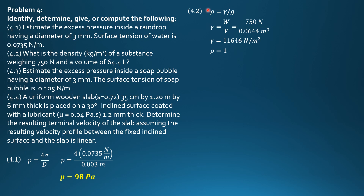Substituting, density is 11,646 N divided by 9.81, where G is 9.81. So, density is 1187 kg per cubic meter. Alternatively, you may solve for the specific gravity first, then multiply by 1,000.